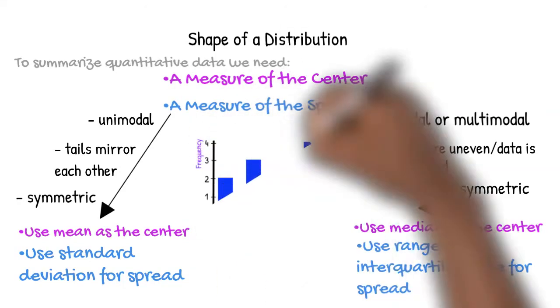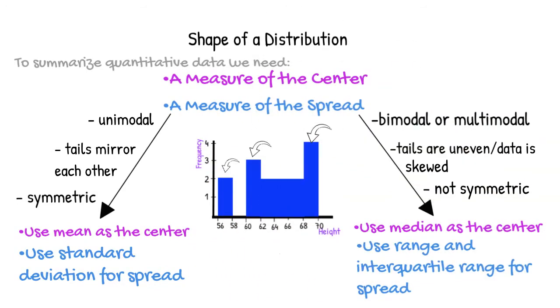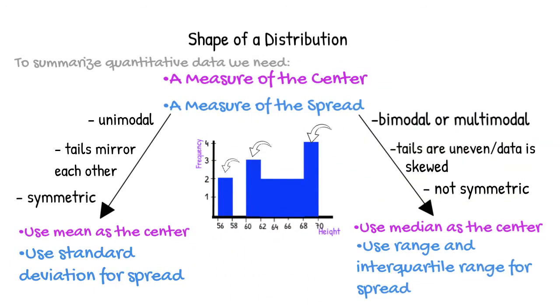Let's look at one more example. Notice here that our histogram has more than one hump. Even though each hump doesn't go up to the same frequency, our data is still considered to be multimodal. It is also clear that the display is not symmetric, so we should use the median, range, and interquartile range to summarize the data here as well.